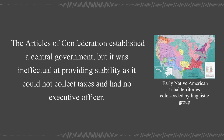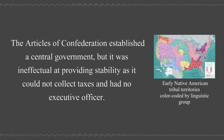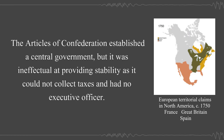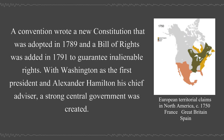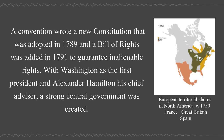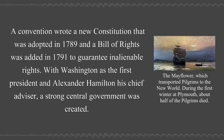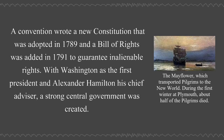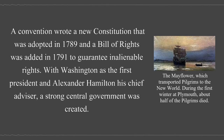The Articles of Confederation established a central government, but it was ineffectual at providing stability as it could not collect taxes and had no executive officer. A convention wrote a new constitution that was adopted in 1789, and a Bill of Rights was added in 1790 to guarantee inalienable rights. With Washington as the first president and Alexander Hamilton as his chief advisor, a strong central government was created.